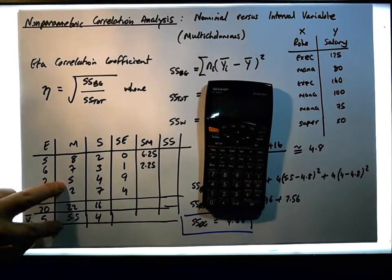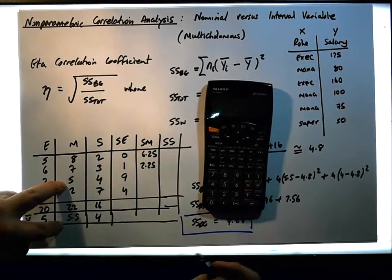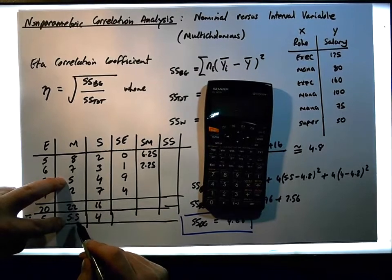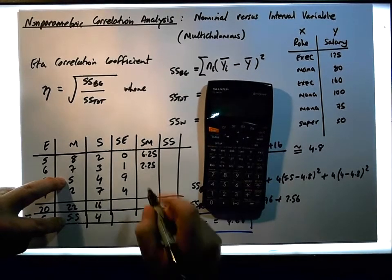And then we have 5 minus 5.5, so 5 minus 5.5 gives us 0.5, and 0.5 squared is 0.25.